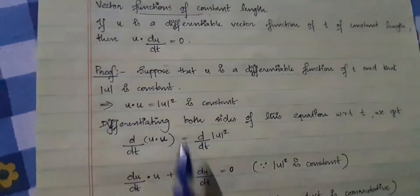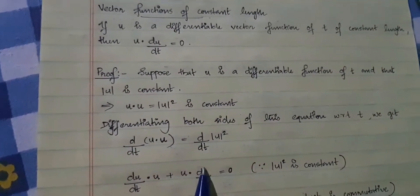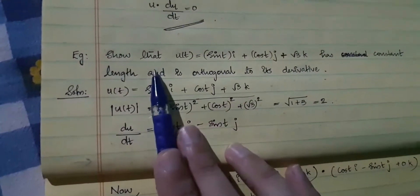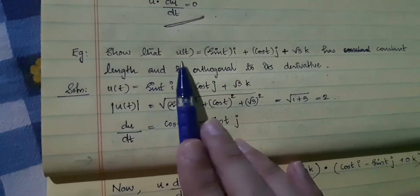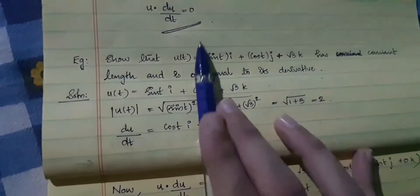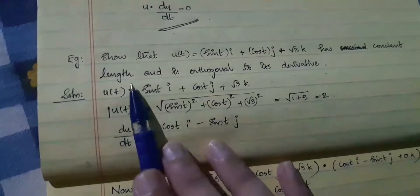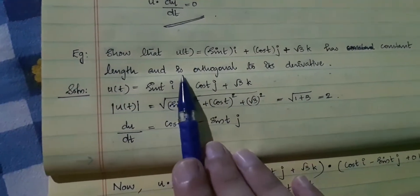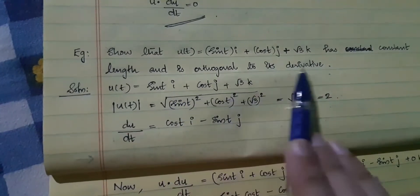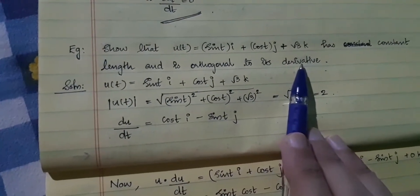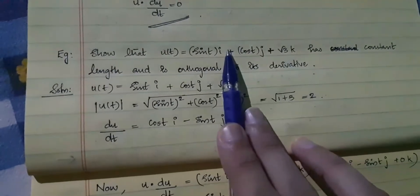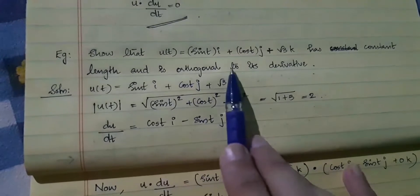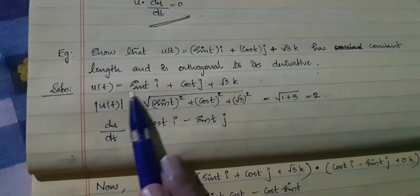That is the result, with the proof given in your notes. We will discuss a problem with that. This example asks us to show that u(t) is a vector-valued function of constant length, and to show that it is orthogonal to its derivative. So we have to show two things: that the given vector-valued function is of constant length, and that it is orthogonal to its derivative.